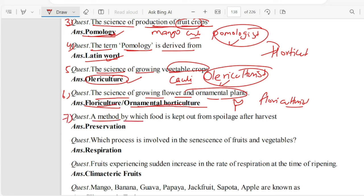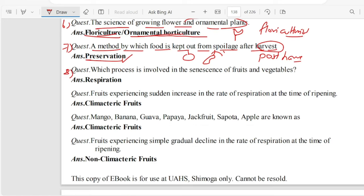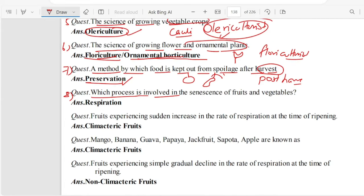This is a method by which food is kept out from spoilage after harvest. This method is Preservation. Which process is involved in the senescence of fruit and vegetables? Respiration.